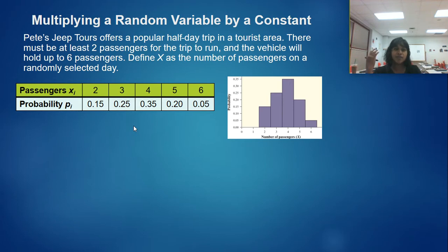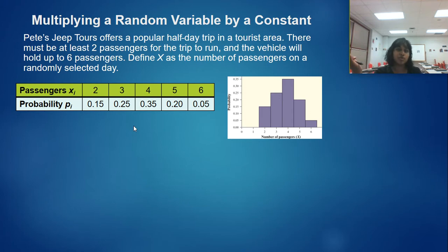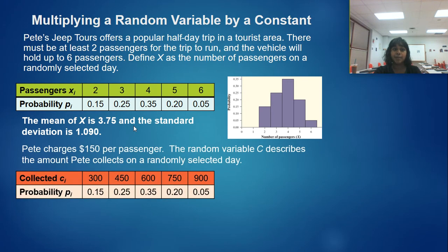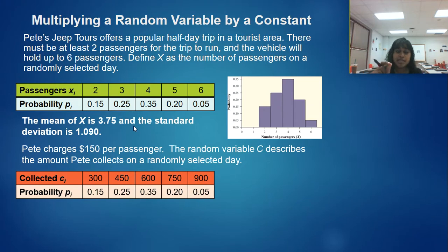He can have two, three, four, five, or six passengers. This is definitely discrete because you're not going to have between two and three passengers. He creates a probability distribution based on defining X as the number of passengers. We calculated the mean and standard deviation and found the mean was 3.75 and the standard deviation is 1.09. Pete is charging $150 per person.